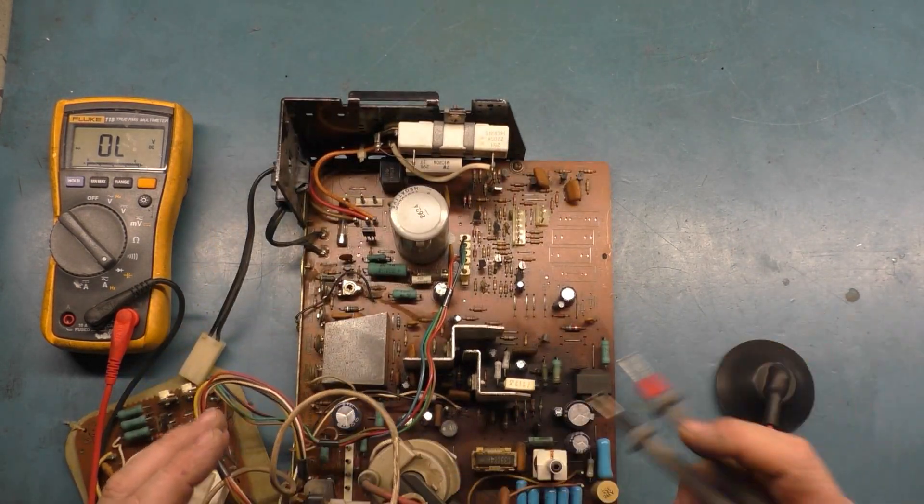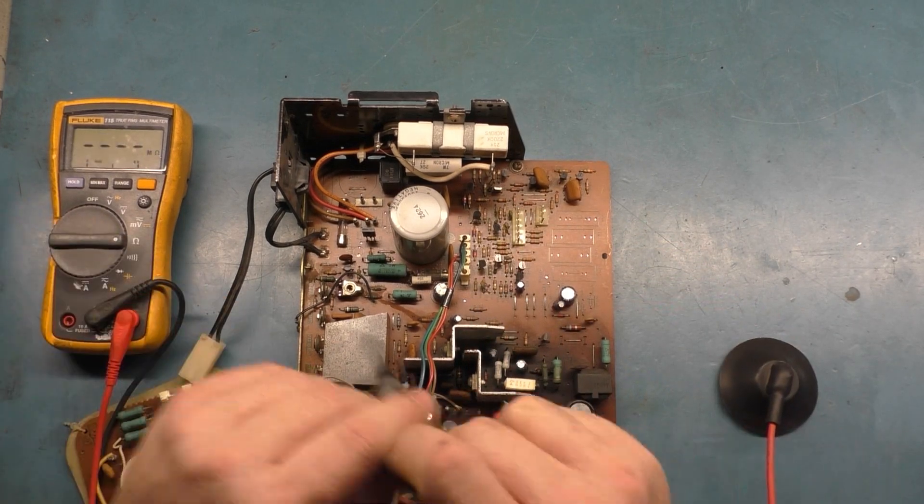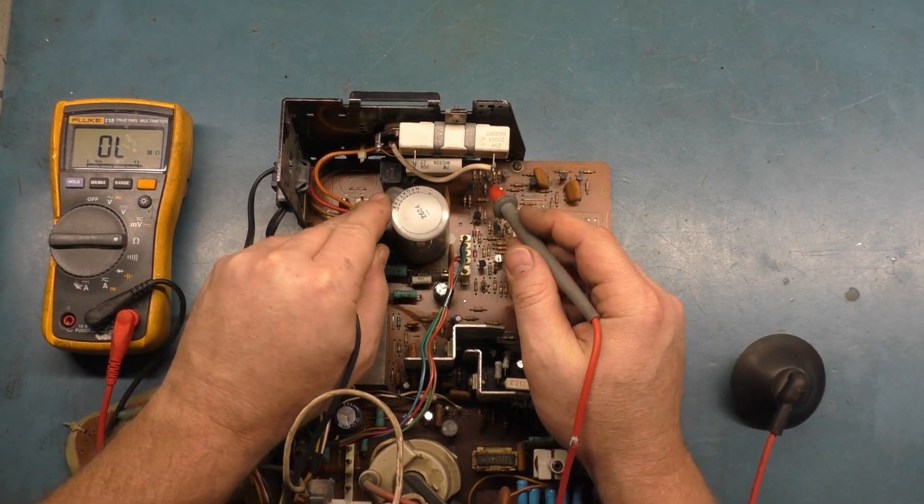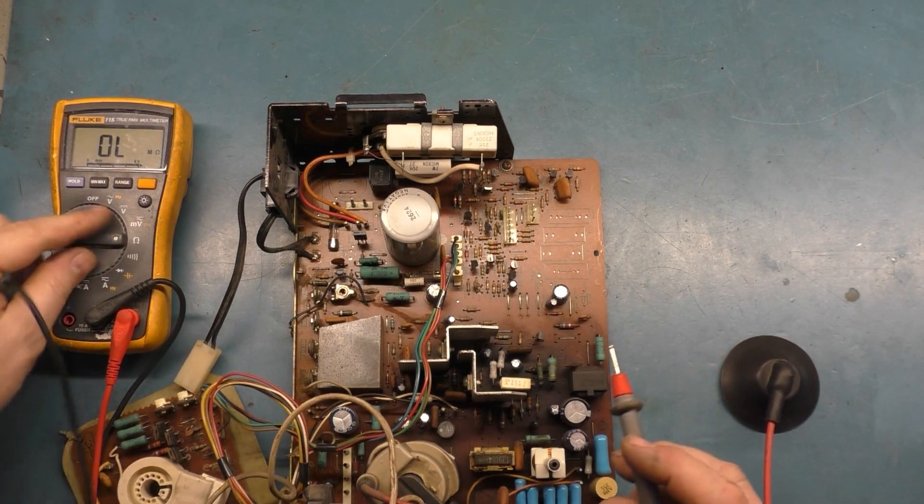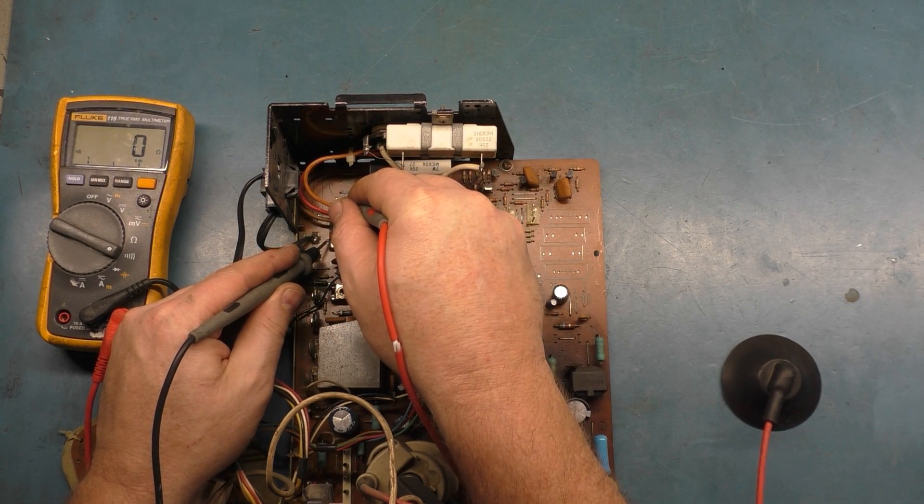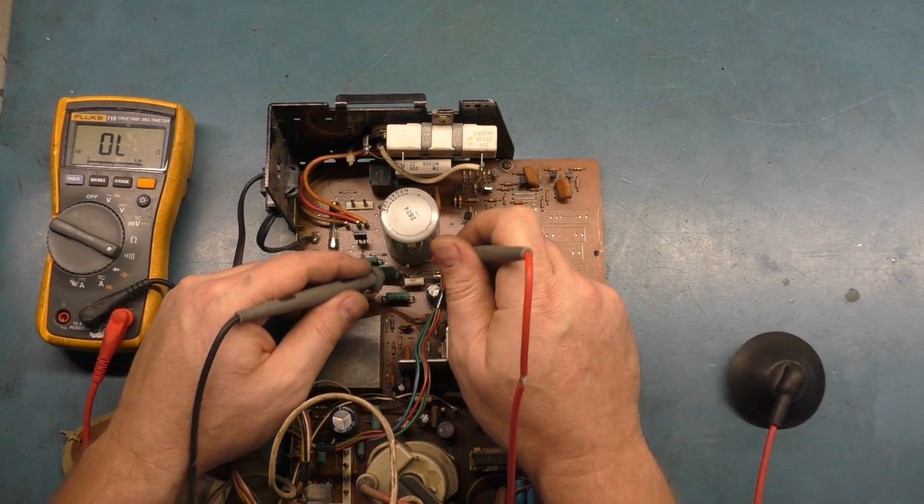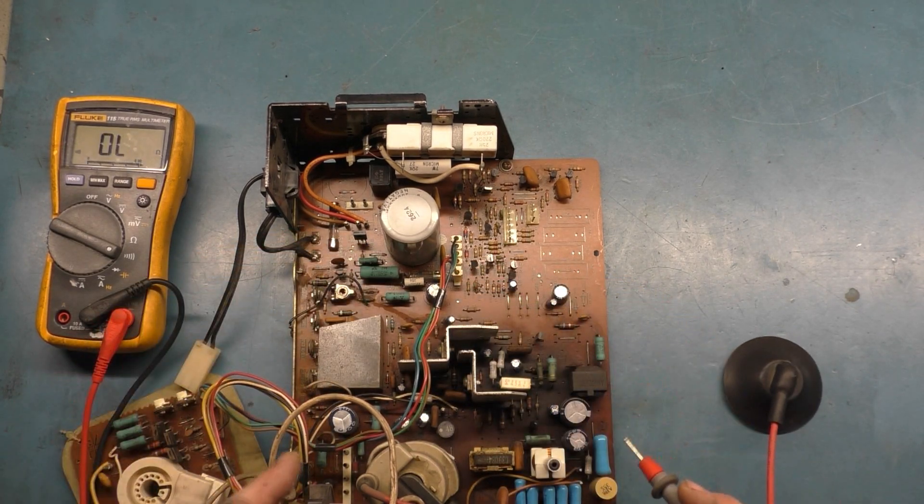Let's check our R902. This ceramic one down here should be 2 ohms. And we read 2.1. Now let's check our two resistors. F902, that's our main input fuse is good. F901, that's good. So our flyback should be okay.